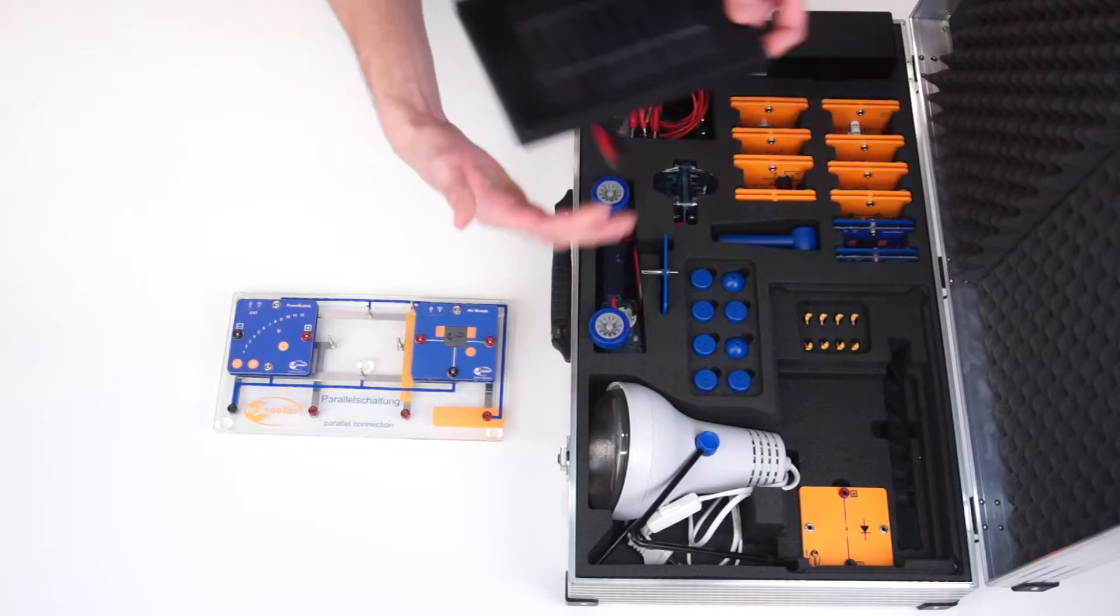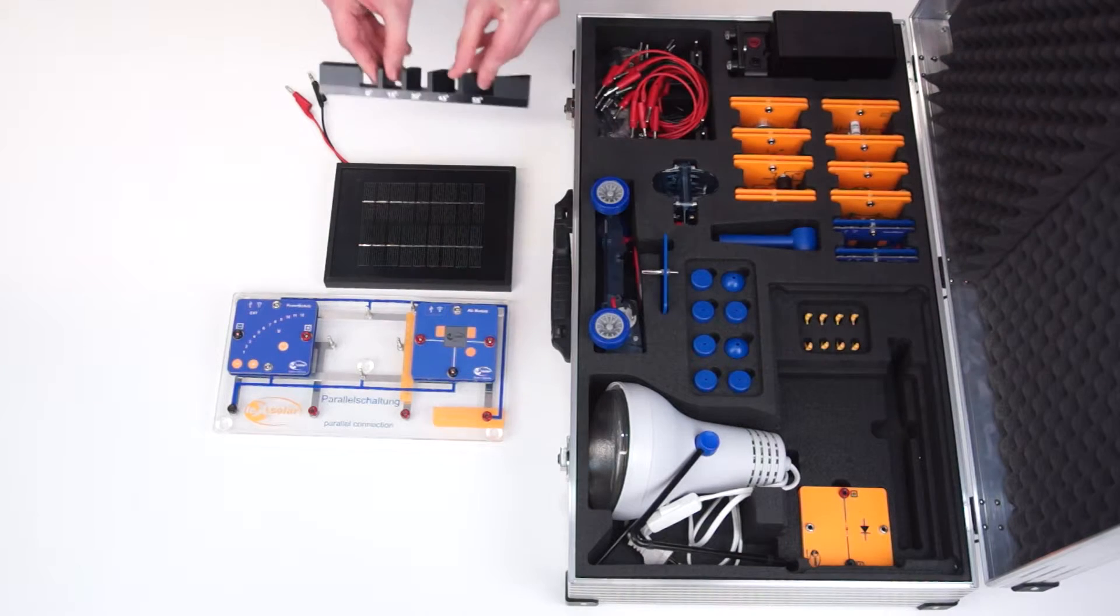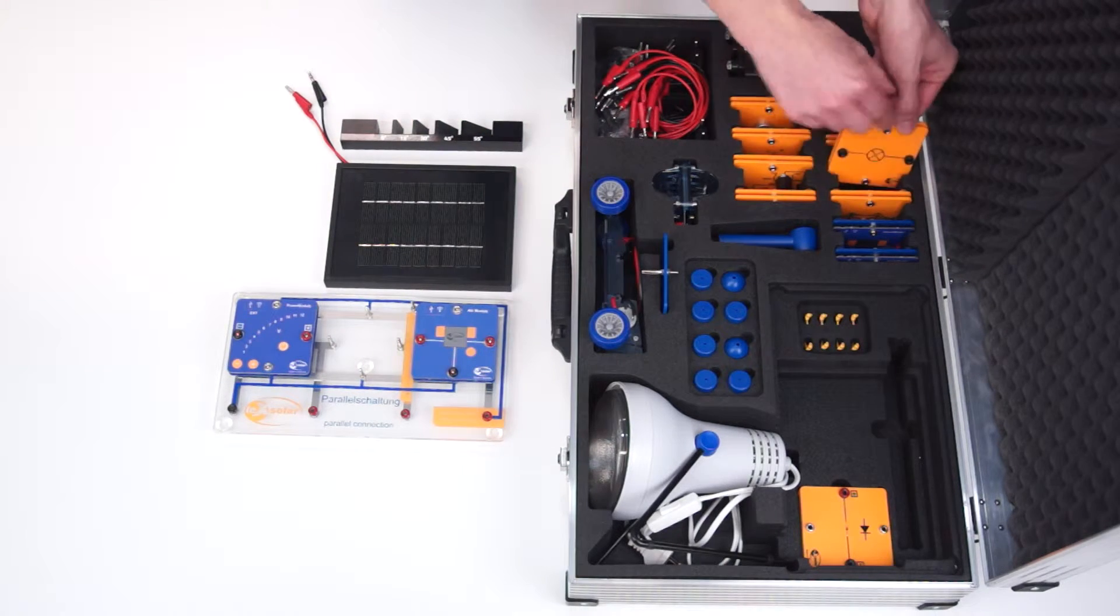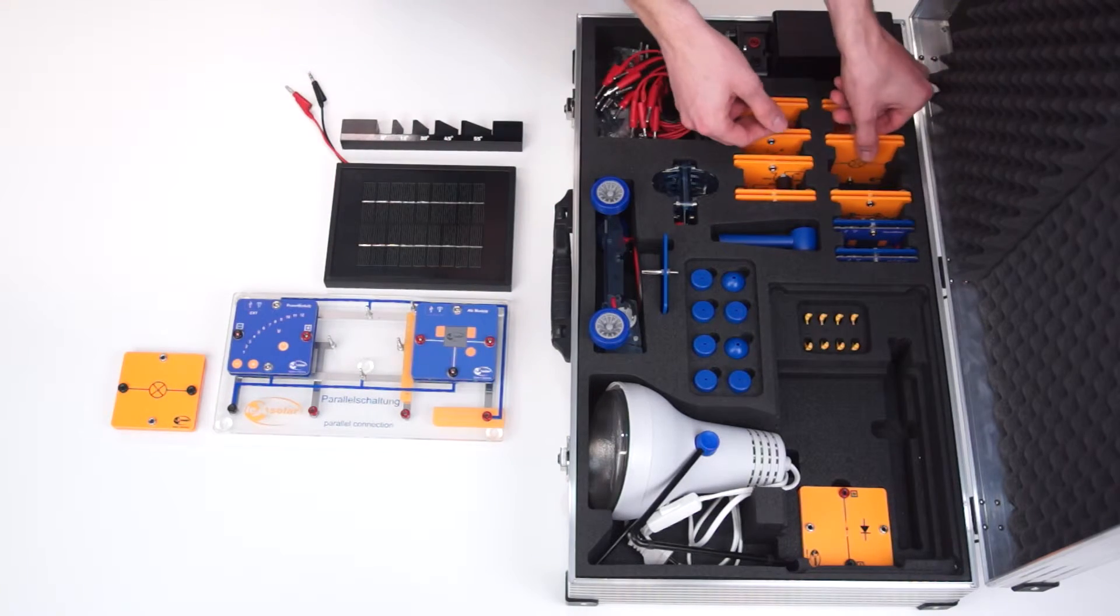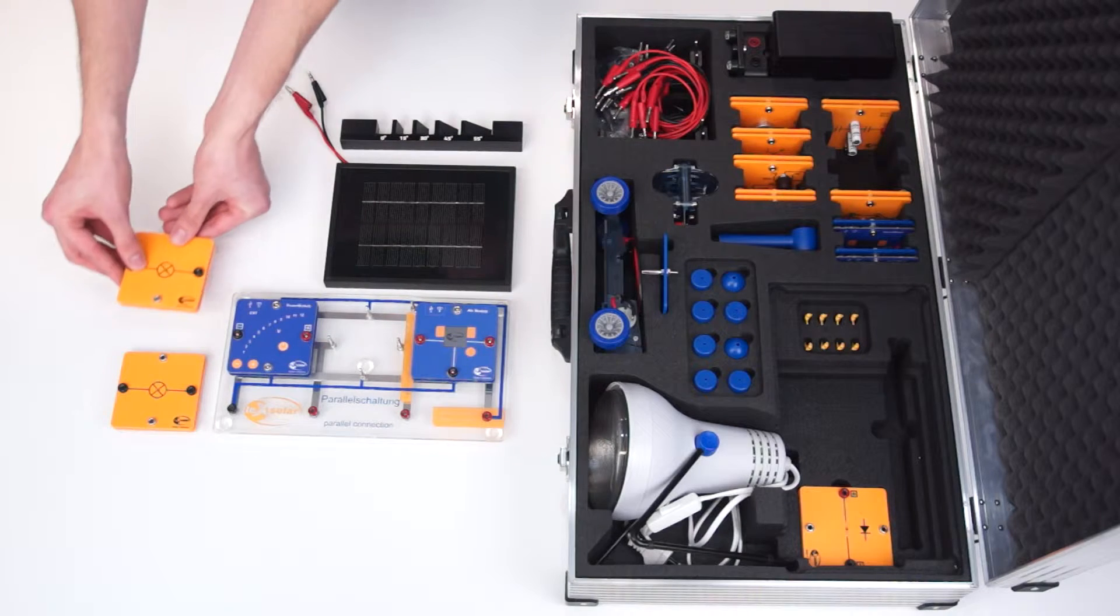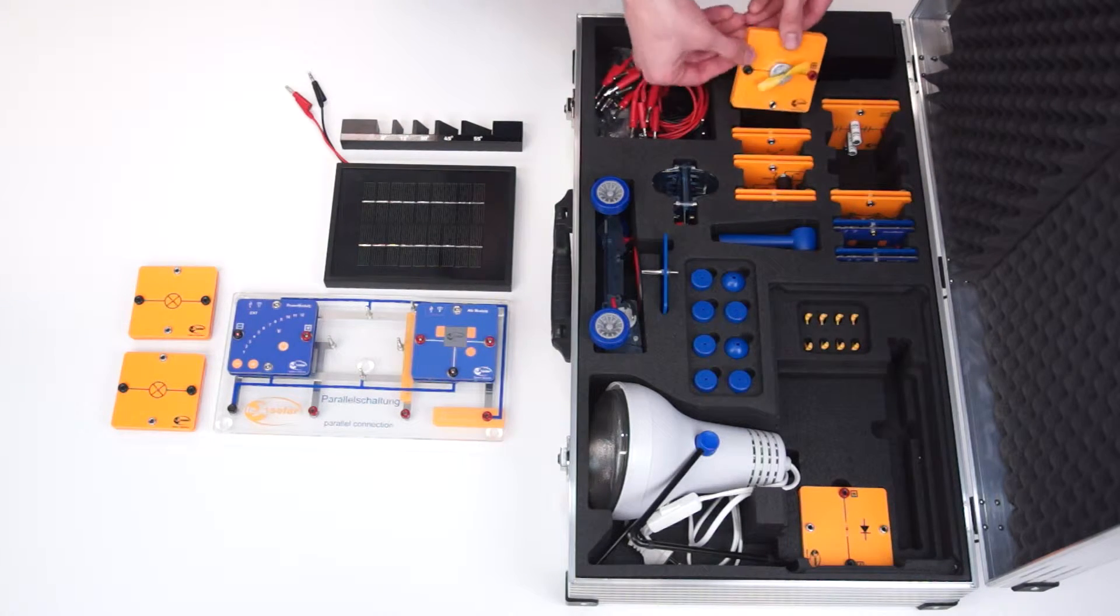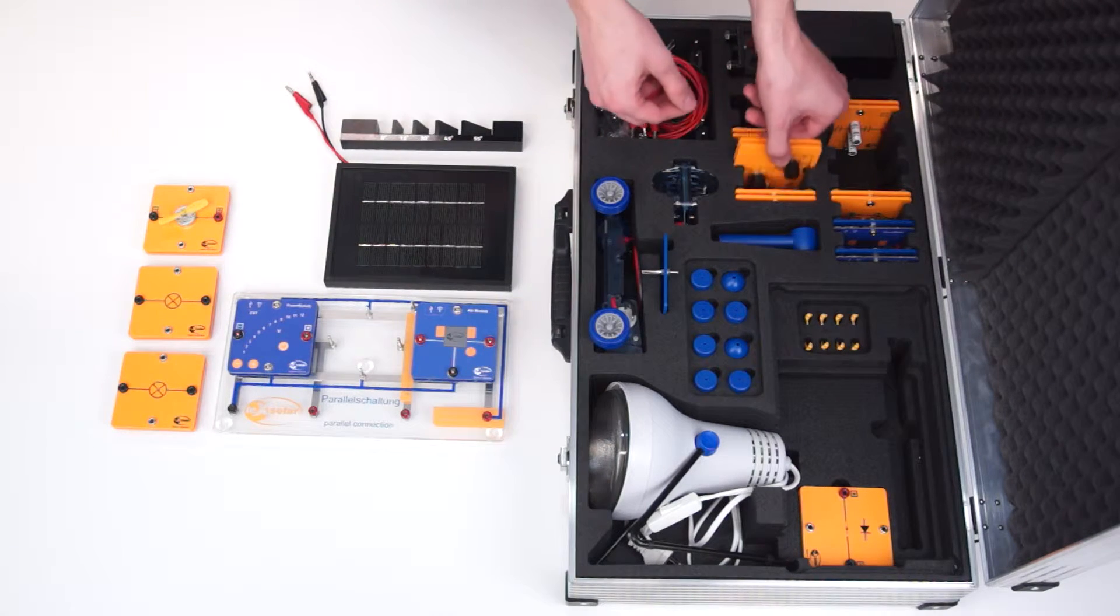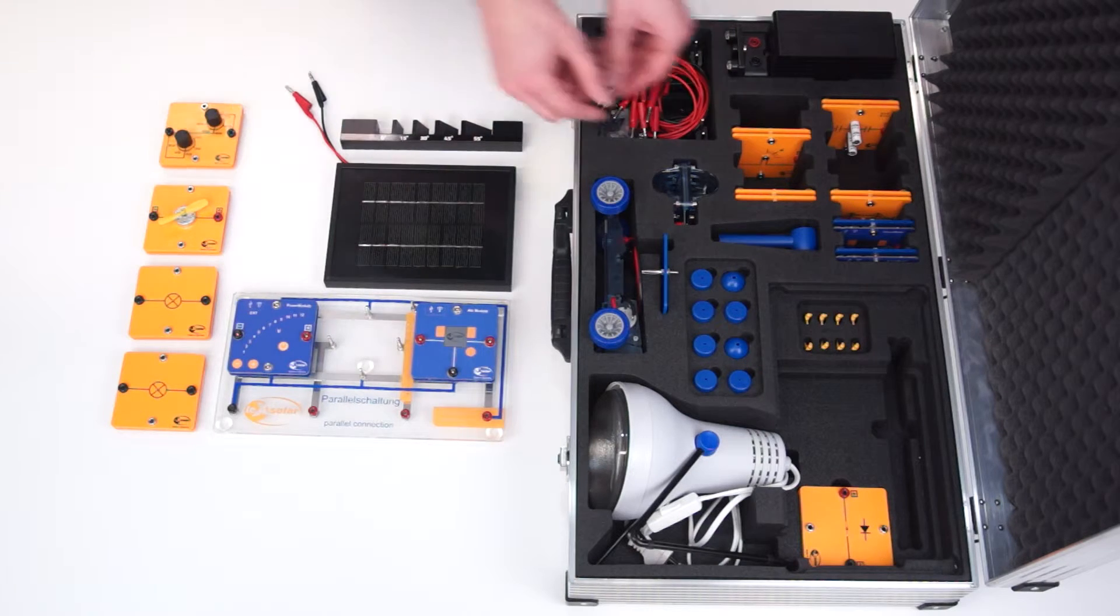Furthermore we need the solar module with base, two lightbulb modules, a motor module, potentiometer module, and a reversible fuel cell.